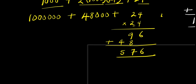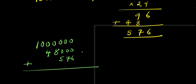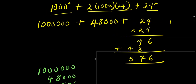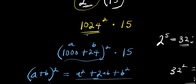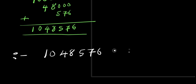So, what we are having here is simply 1,000,000 plus 48,000 plus 576. Adding these together: 1,048,576. That becomes the value for 1024 to the power of 2. Remember we need to multiply by 15. So therefore, we have 1,048,576 times 15.